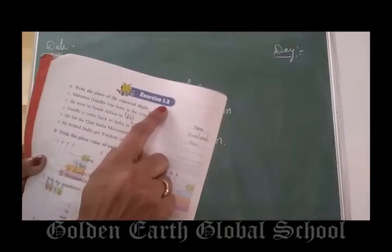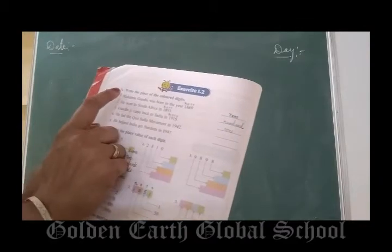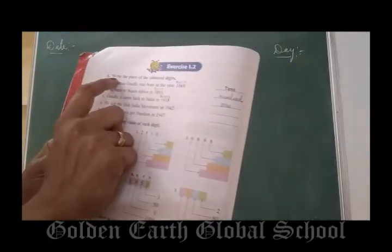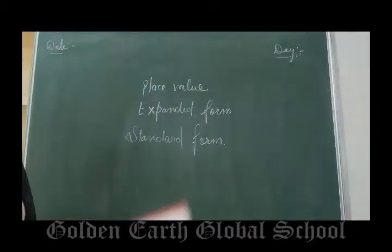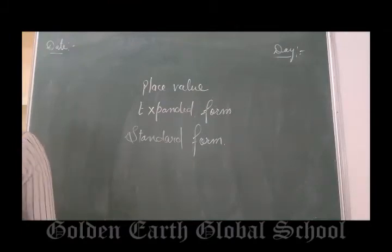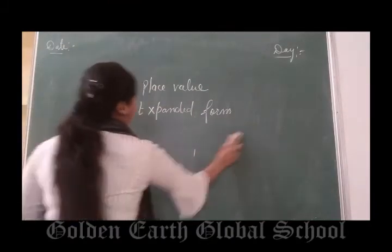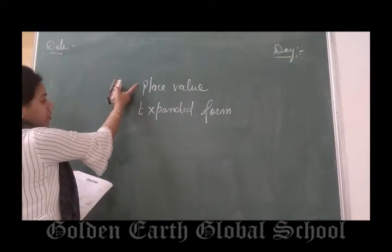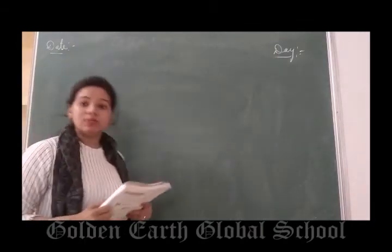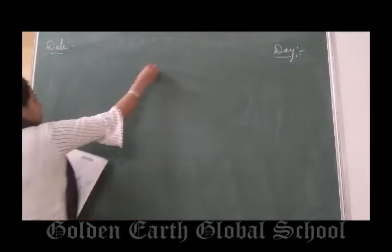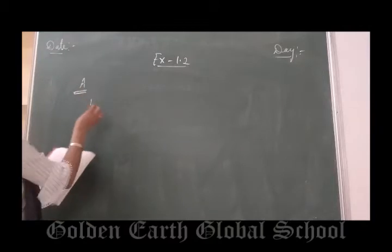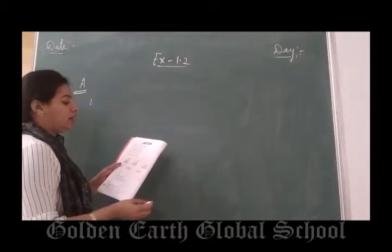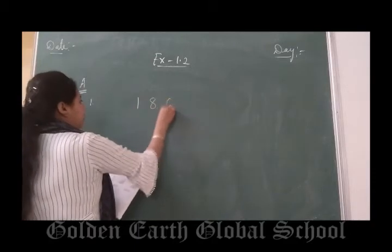Now, your Exercise 1.2. In Exercise 1.2, Part A: write the place of the colored digit. For the colored digit, you have to write the place. You have to write the place.